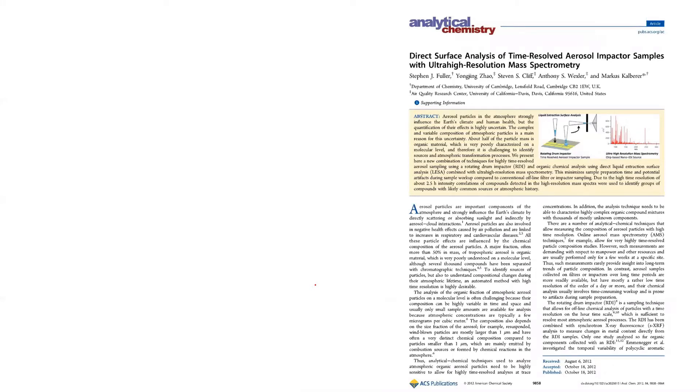I'm going to choose this article as an example. This article was written by professors and researchers at Cambridge University in the UK, in collaboration with people at the University of California in the United States. I chose this example because you can see that these are authentic English speakers — one is called British English, another is called American English.